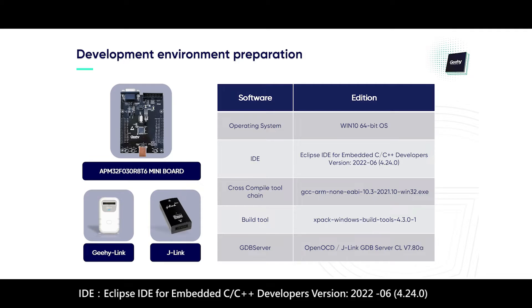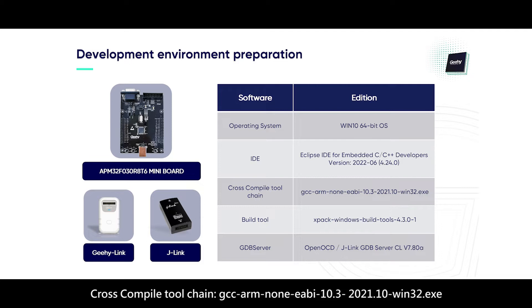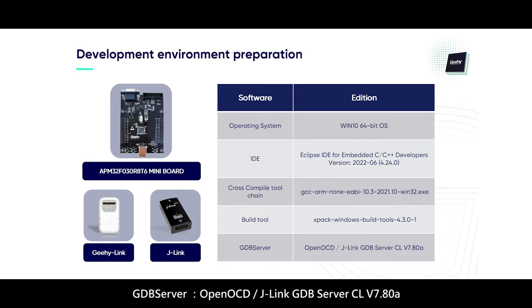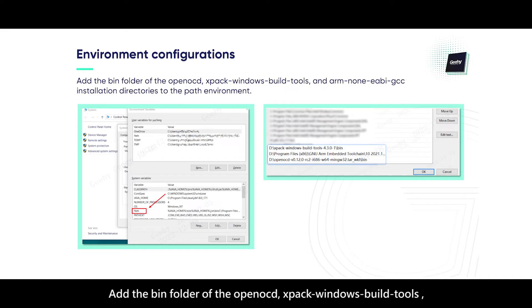Or C++ developers. Cross-compile toolchain: GCC ARM 9EB 10.3 2021.10 Win32.exe. Build tool: XPAC Windows Build Tools 4.3.01. GDB Server: OpenOCD. J-Link GDB Server CLV 7.808. Add the bin folder of the OpenOCD and XPAC Windows Build Tools.